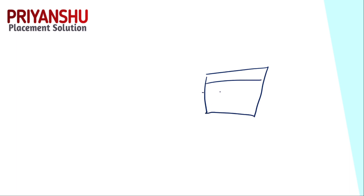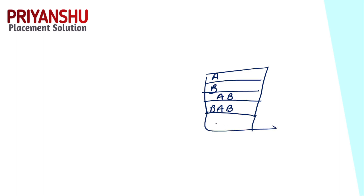Just as an example: you have a notebook with N number of lines. If you write A on the first line and B on the second line, then the third line is A+B, the fourth line is B+(A+B), and so on. This is the basic question that is asked.